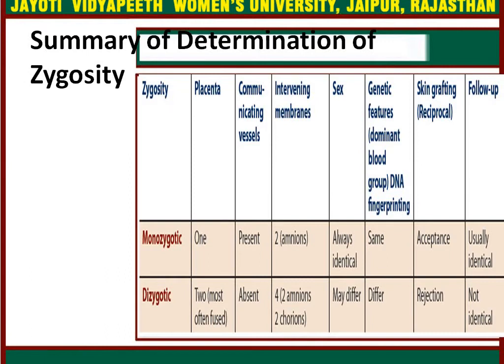This table shows the summary of determination of zygosity. Certain things differentiate between monozygotic and dizygotic twins: the placenta, the communicating vessels, the intervening membranes, the sex, the genetic features, skin grafting, and lastly follow-up.